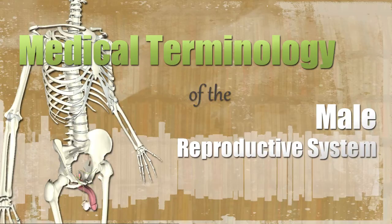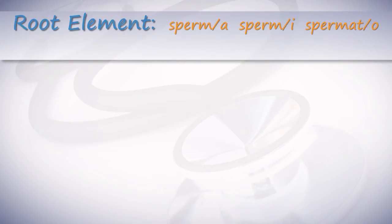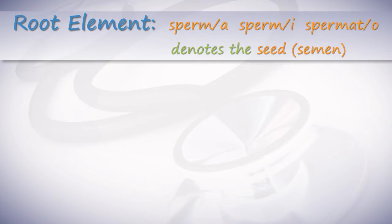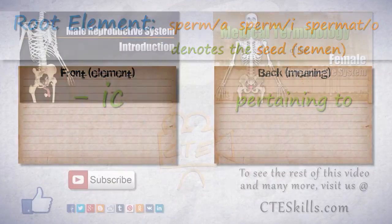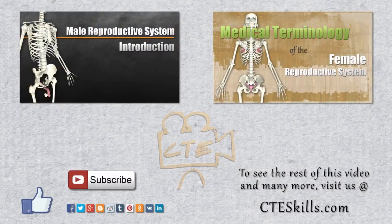The first root element we'll look at is sperma, spermi, or spermato — all of these denote the seed or semen. The suffix -ic means pertaining to.